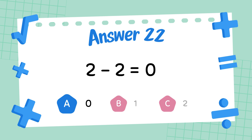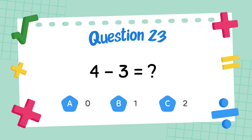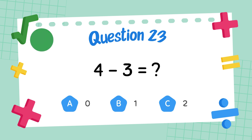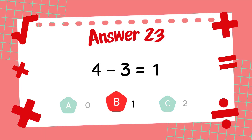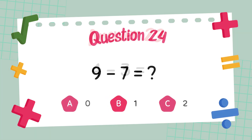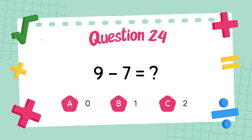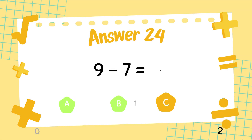What is 7 minus 0? The answer is 7. What is 2 minus 2? The answer is 2. What is 4 minus 3? The answer is 1. What is 9 minus 7? The answer is 2.